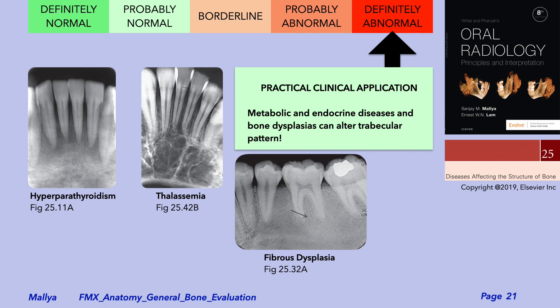Additionally, you do not see any lamina dura around the roots of the teeth. Next, consider the radiograph from a patient with thalassemia. In this condition, anemia drives a proliferation of the bone marrow. As the bone marrow cells proliferate, the bone marrow spaces enlarge. The radiograph from this patient is from the anterior mandible and demonstrates marrow spaces that are much larger than you would typically see in the anterior mandible.